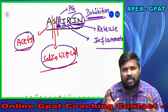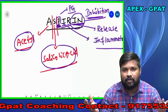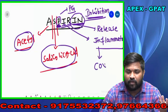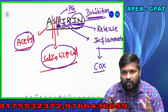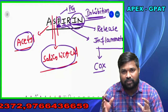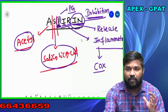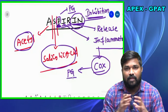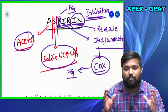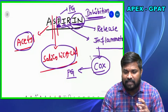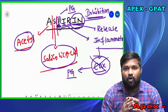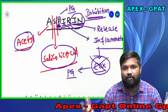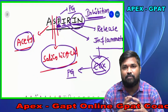How does it inhibit Prostaglandin Inflammatory Release? By inhibiting the enzyme we call COX — Cyclooxygenase. This enzyme is helpful for the synthesis of prostaglandin. When we inhibit this enzyme, there is no prostaglandin inflammatory release, and then we can prevent the inflammation. That is the mechanism of action of aspirin.